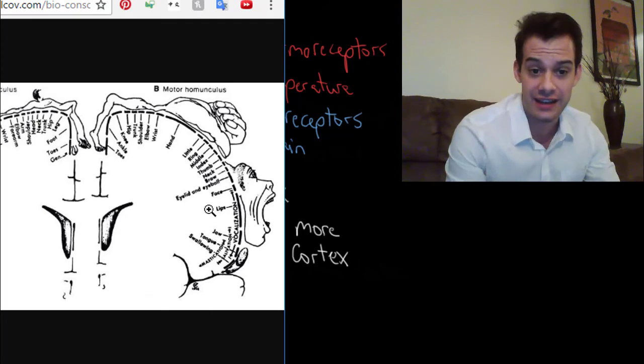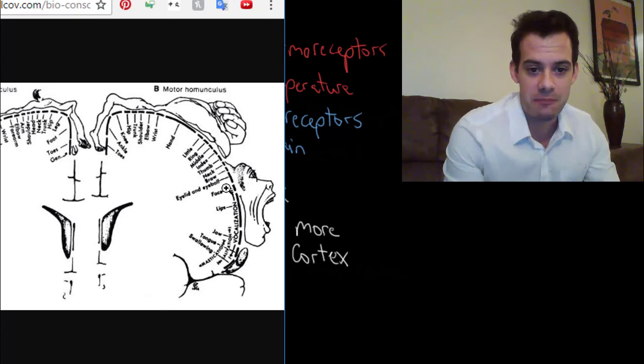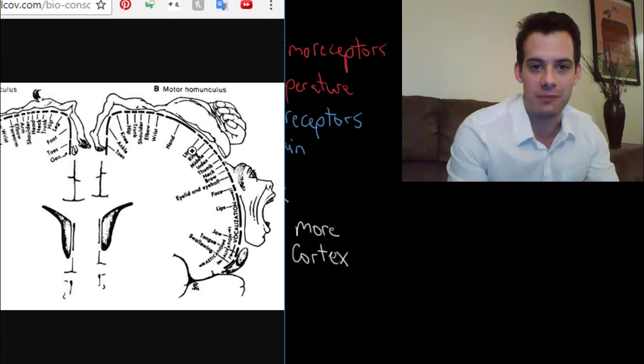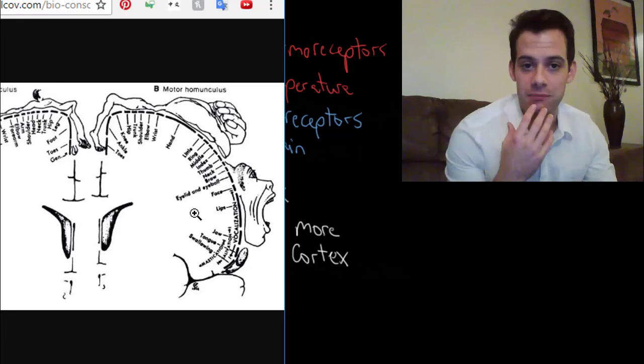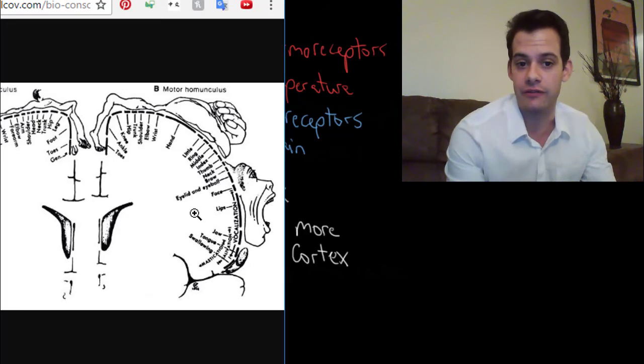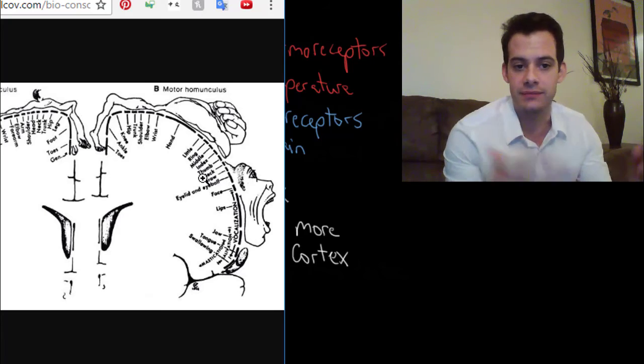You can see the same pattern applies but the more complex movements require more brain space. So you can see, I mean in this case it's really striking. Your hands are massive. You're basically just mouth and hands in the motor homunculus. And that's because you make lots of very precise, delicate movements with your lips and your tongue in order to speak. If we didn't have that we wouldn't be able to speak articulately or really at all.